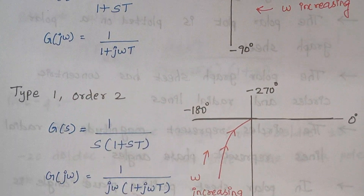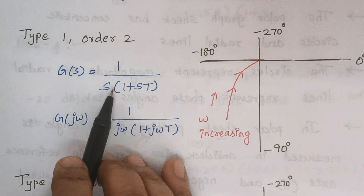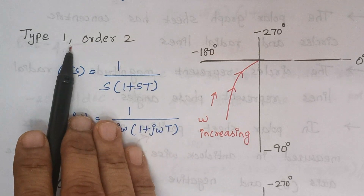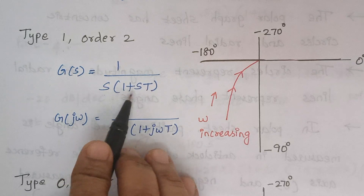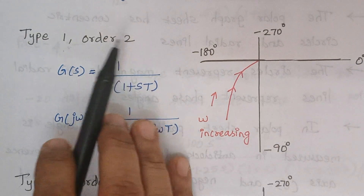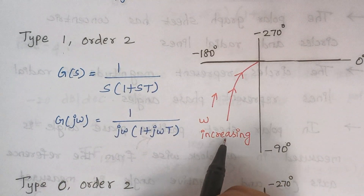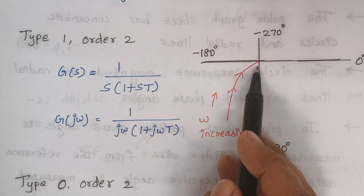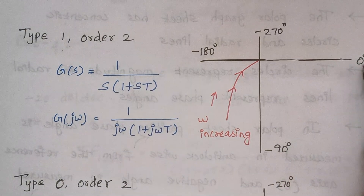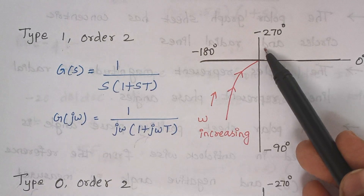The next one is a type 1, order 2 system. With one individual s in the denominator, it is type 1. When you multiply, the maximum power of s is 2, so the order is 2 — since s times s gives s squared. For a type 1, order 2 system the polar plot will start and end at specific positions. The standard angle markings are 0, 90, minus 90, minus 180, and minus 270.